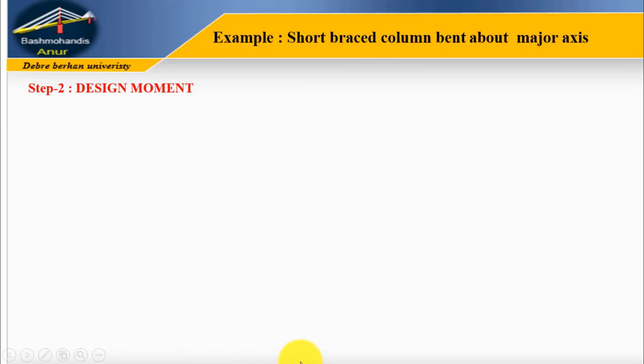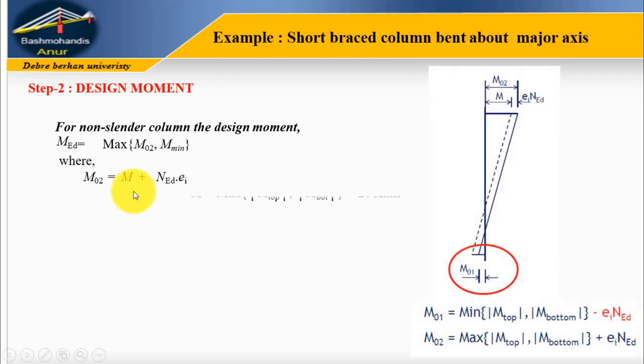Step 2 is calculation of the design moment. For non-slender column or short column, the design moment M ED equals the maximum of M02 and M minimum. M02 equals M plus design axial force times the eccentricity due to imperfection.